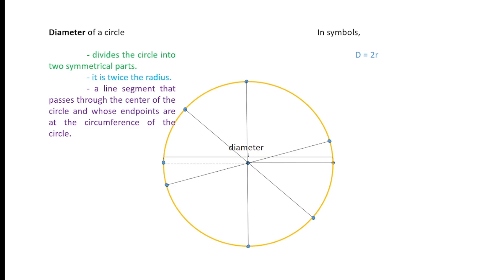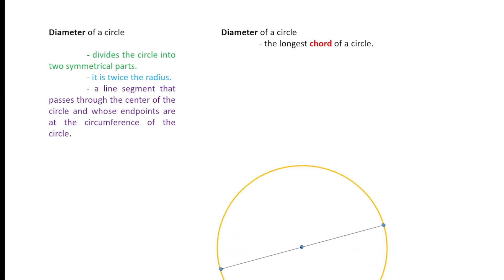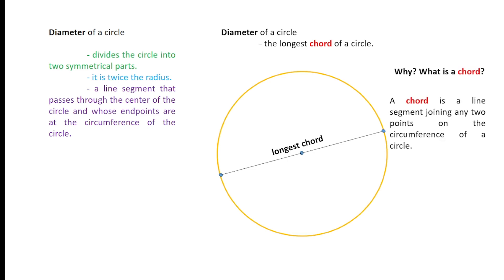All these line segments passing through the center of the circle with endpoints on the circumference are known as diameters of the circle. The diameter of a circle is also known as the longest chord of a circle. A chord is a line segment joining two points on the circumference of a circle. What's key is that a chord does not require passing through the center.